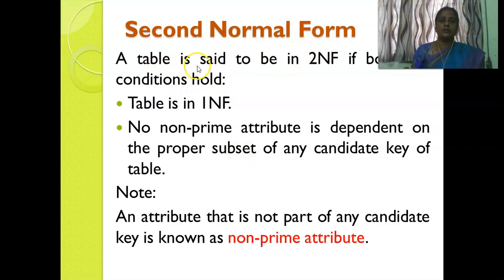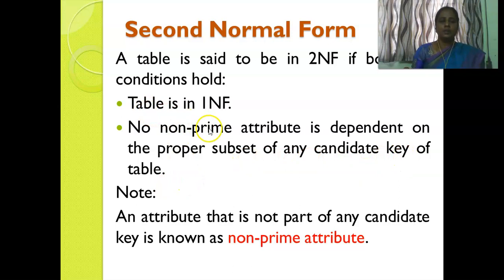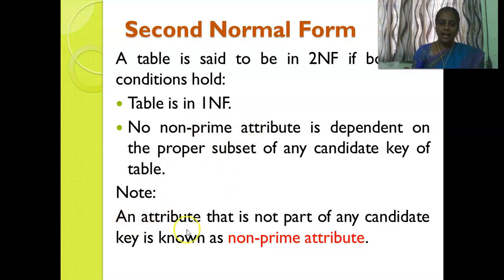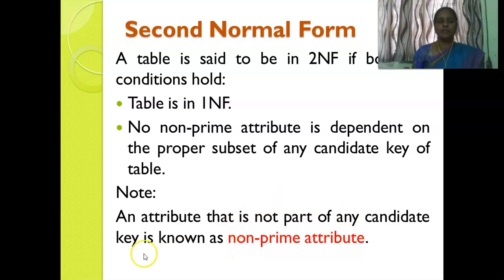Second normal form: a table is said to be in second normal form if it satisfies these conditions — first, the table must be in first normal form, and second, no non-prime attribute is dependent on the proper subset of any candidate key of the table. A non-prime attribute is an attribute that is not part of any candidate key. A prime attribute is an attribute that is part of any candidate key.